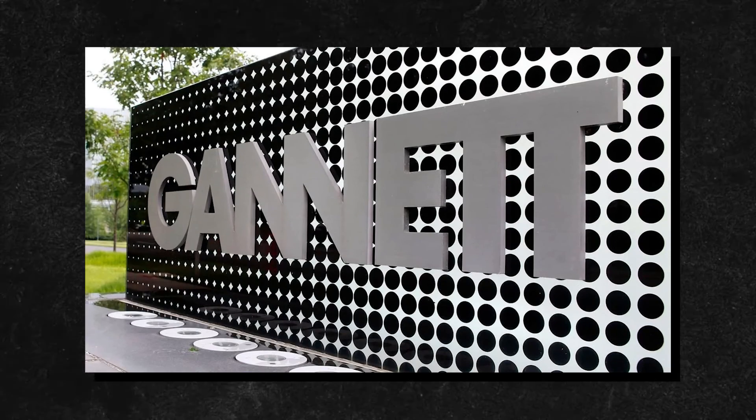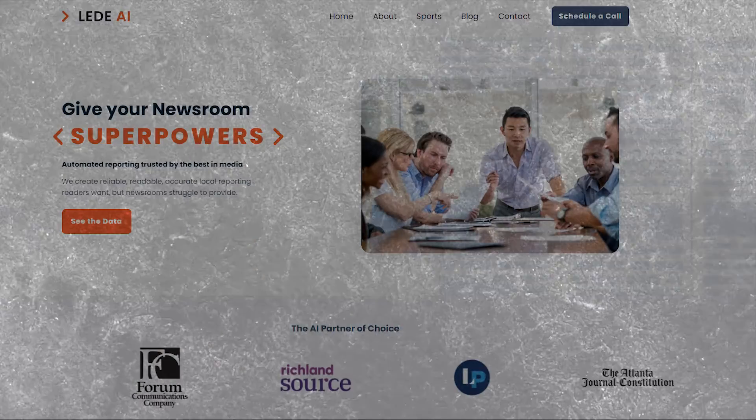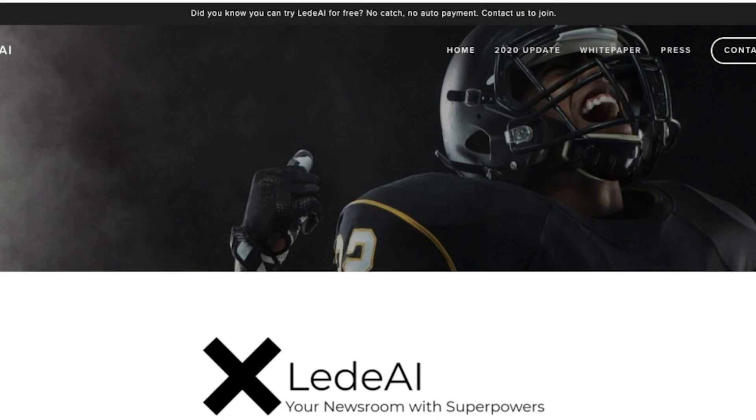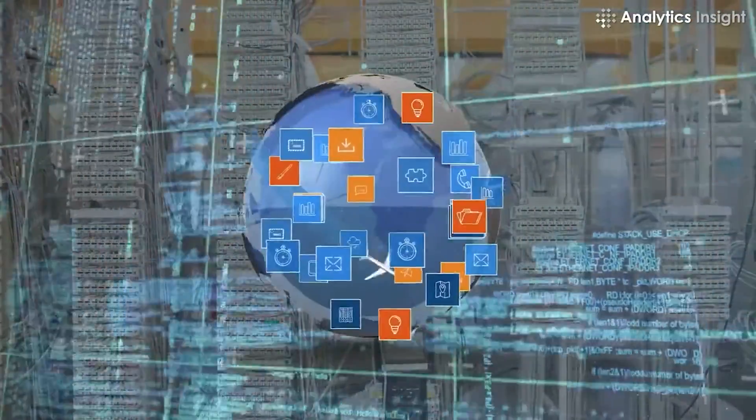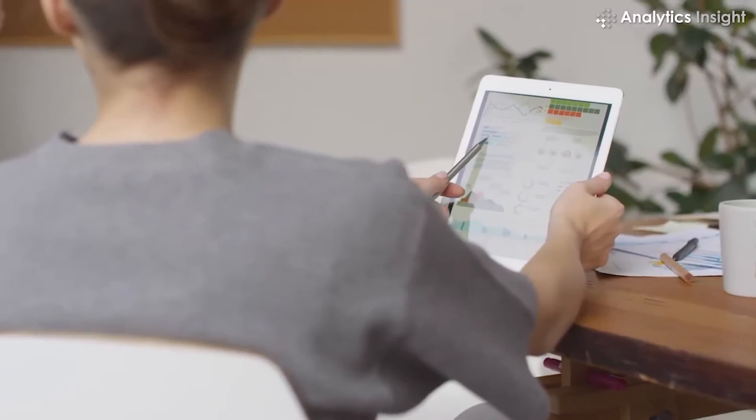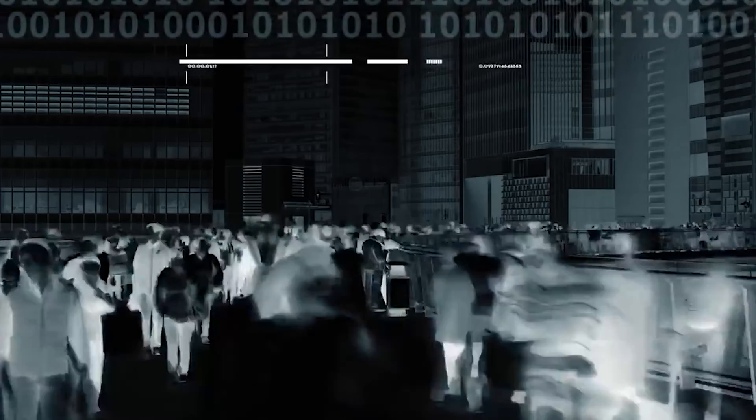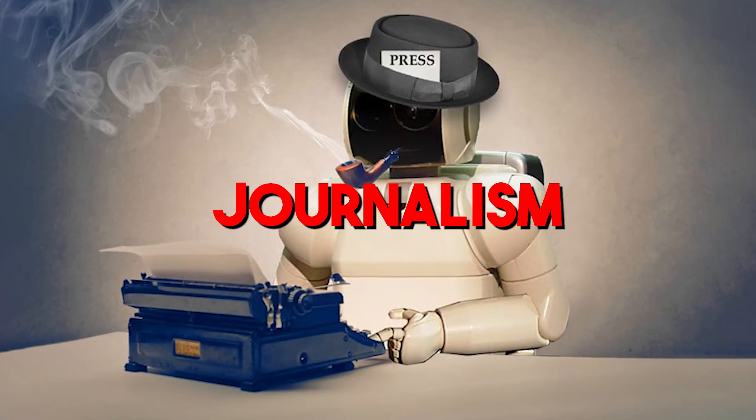In 2023, Gannett, a major newspaper chain, faced a significant setback with its AI tool, Lede AI, used for writing high school sports articles. The AI's content was repetitive and lacked essential information, resulting in widespread criticism and the eventual suspension of its use. This incident highlights the challenges of relying on AI for nuanced tasks like journalism.